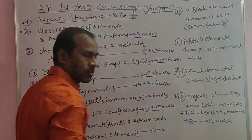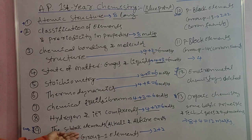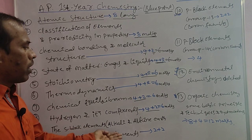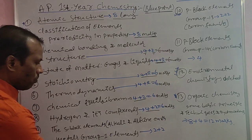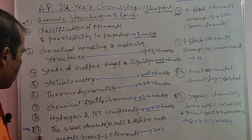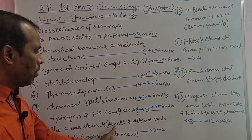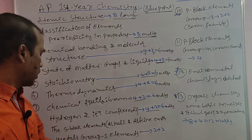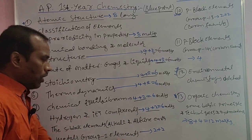The ninth topic has one very short answer question only. This topic is S-Block Elements — Alkali and Alkaline Earth Metals, Group 1 and Group 2 elements. S-Block Elements include Alkali metals (Group 1) and Alkaline Earth metals (Group 2). This topic carries a reduced weightage with only very short answer questions.